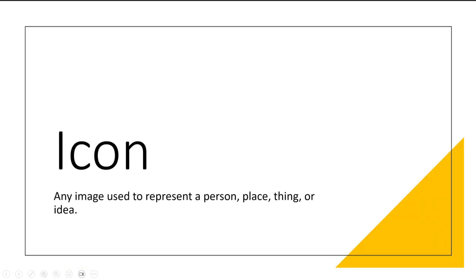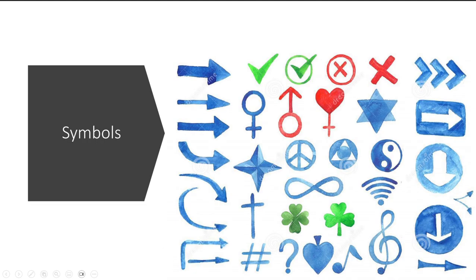So we're going to talk about icons, which is any image used to represent a person, place, thing, or idea. We can divide icons into a few different categories. First, we have symbols — images used to represent ideas, concepts, and philosophies. A check mark, an arrow, Wi-Fi symbol, yin-yang, infinity, luck, gender symbolism, a cross, treble clef — a lot of different things. These are kinds of icons. Under the umbrella of icons, these are symbols.